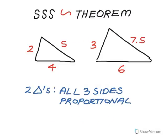Next is the side-side-side similarity theorem. Like you can probably tell from the name, this is when all three sides of two triangles are proportional — all three sides in one are proportional to the three sides in the second triangle.